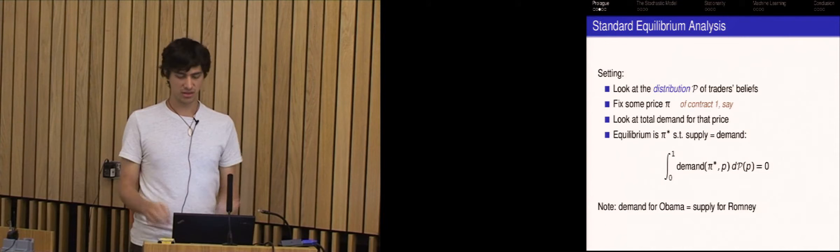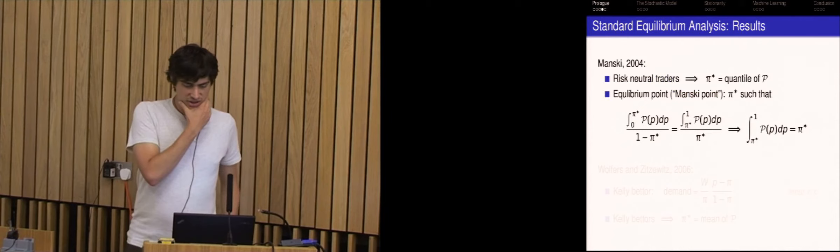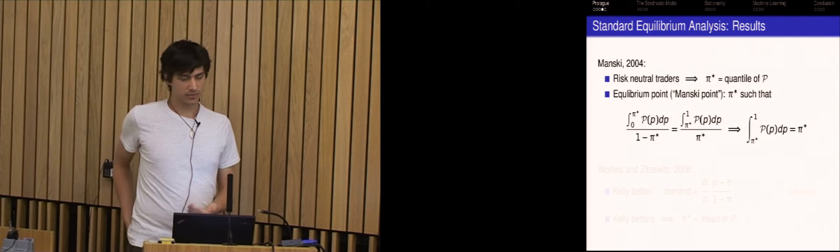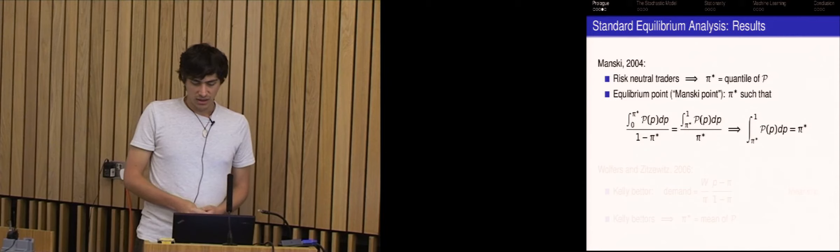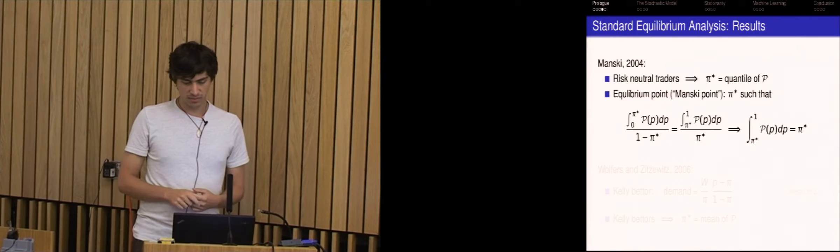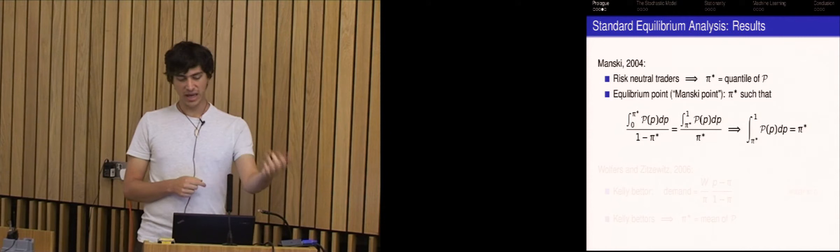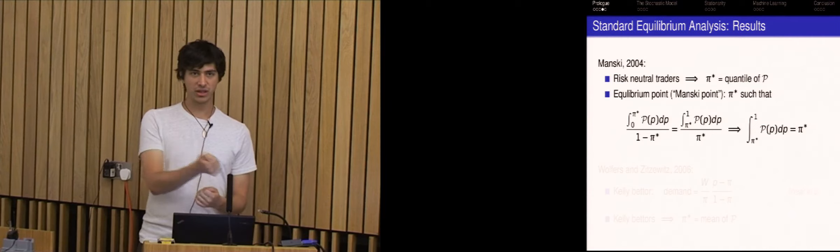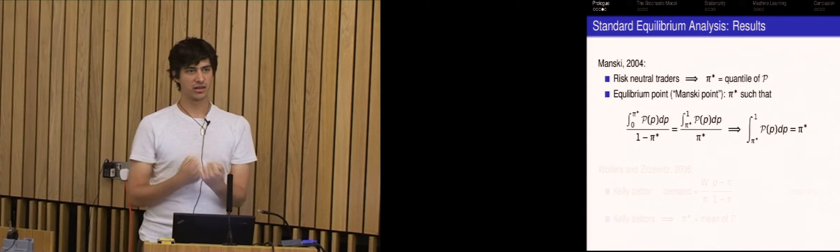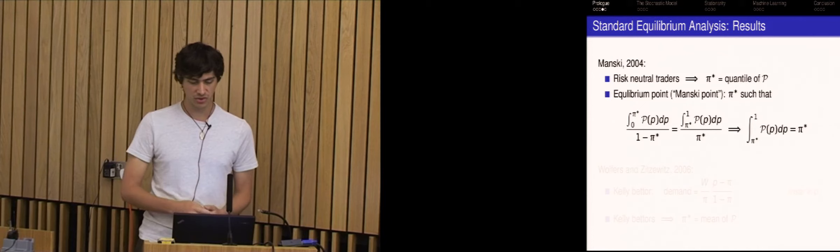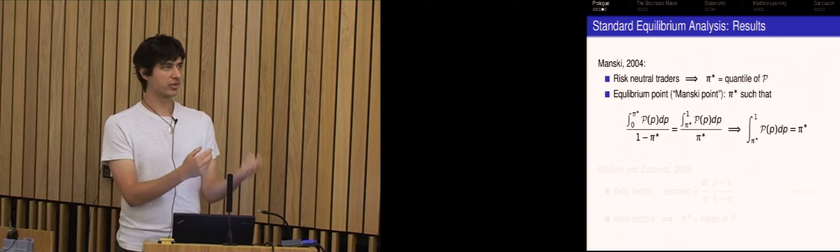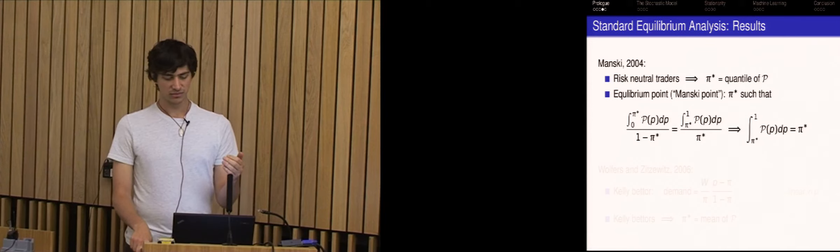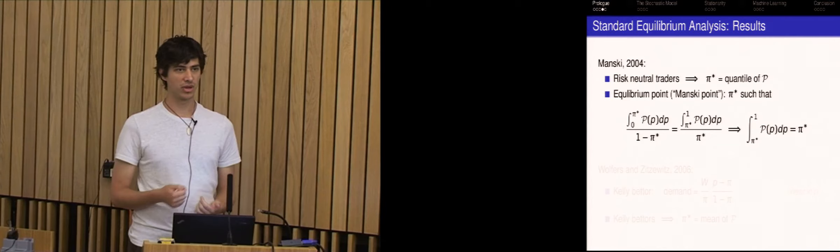So another way to express this supply equals demand is you want the equilibrium price such that an equal number of contracts on either side are purchased. So there are two papers that look at this. The first is by Mansky in 2004 and he considered risk neutral traders and found that the equilibrium price in this setting was equal to some quantile of the distribution. So I'll just very quickly go over the argument. On the left hand side of the equation, the pi is the price for the Obama contract. The left hand side of the equation is the demand for Romney contracts, the other event. So you can see that if your belief that Obama is going to win is actually less than the current price, then you're better off buying the other contract.